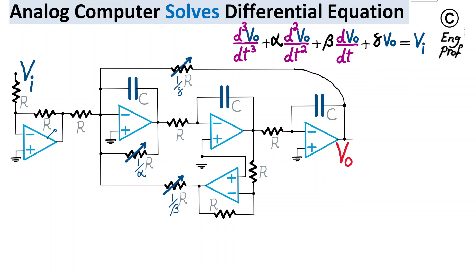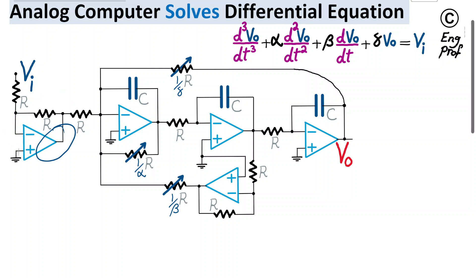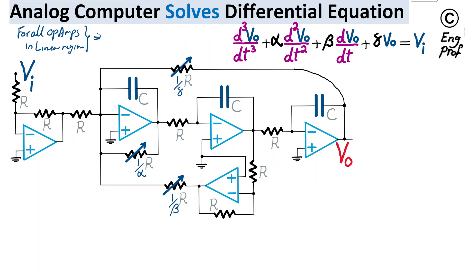To quickly analyze the circuit, we assume that positive-negative supply voltages — like plus-minus 5 or plus-minus 10 volts — are applied, so all op-amps are properly biased. Since the output of each op-amp is connected via a feedback route to the negative or inverting input terminal, the op-amps are properly in negative feedback. Therefore, all op-amps are in the linear region of operation, and the virtual short condition is valid — they are not saturated.